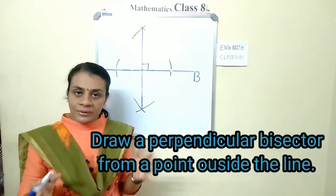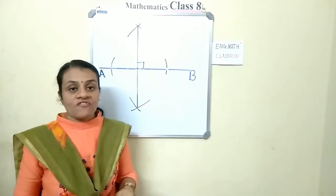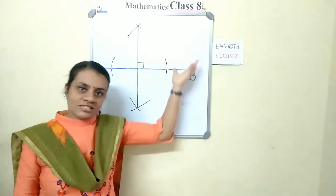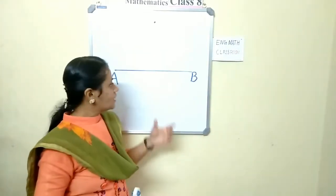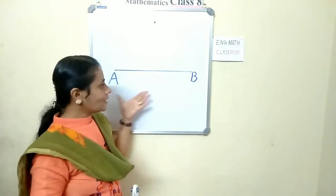Next construction is, how to draw a perpendicular bisector from a point outside the line or away from the line. Now, draw a line.